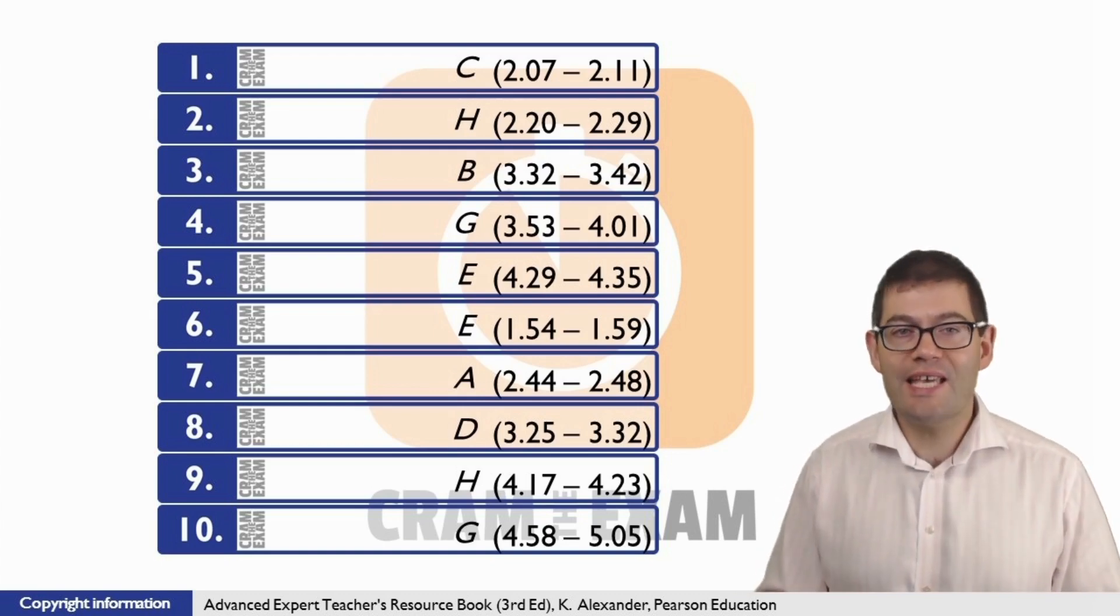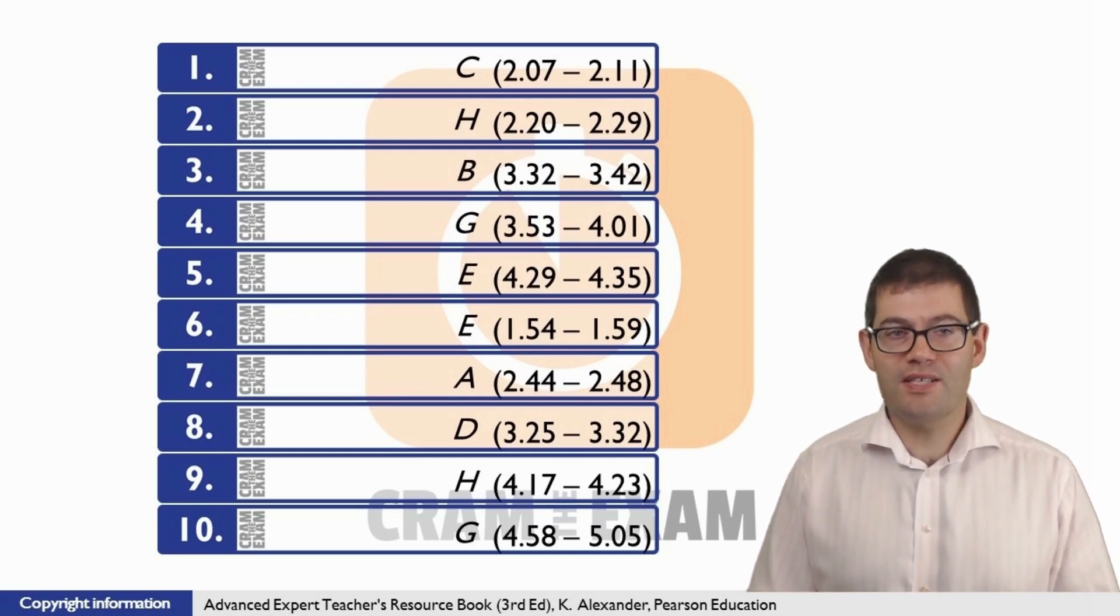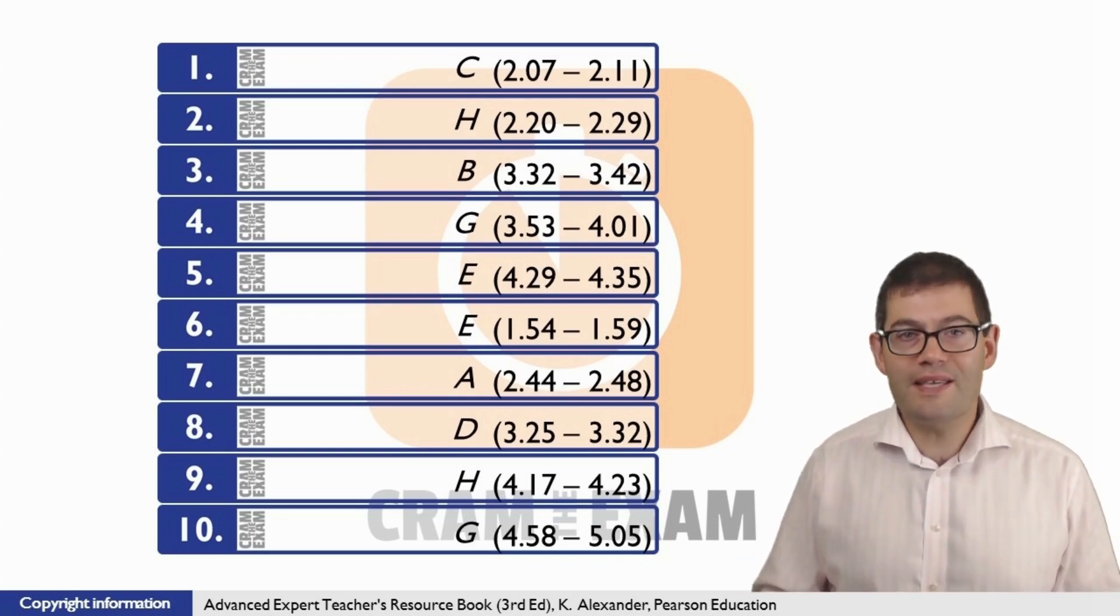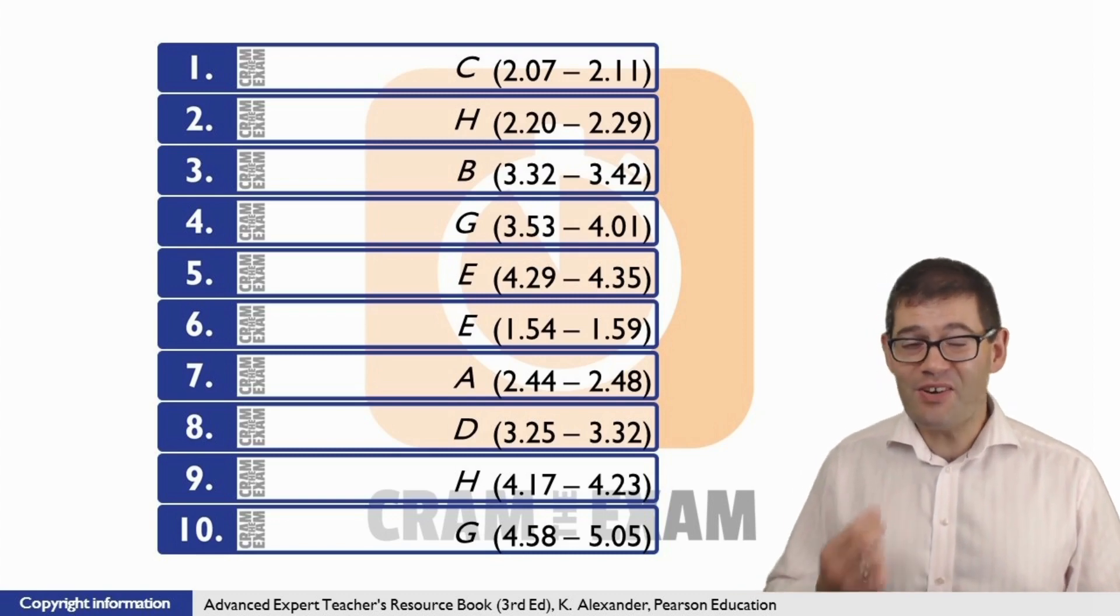For question seven, the answer is A, the expense. And that's because speaker two says, I've been using all my savings and I've had to cut back on luxuries.